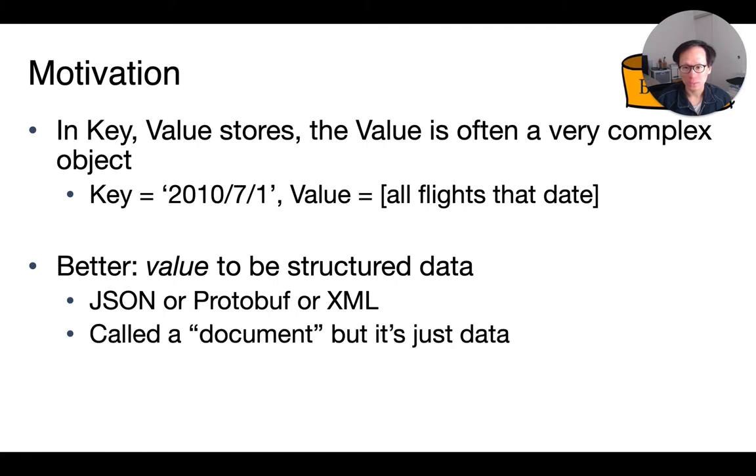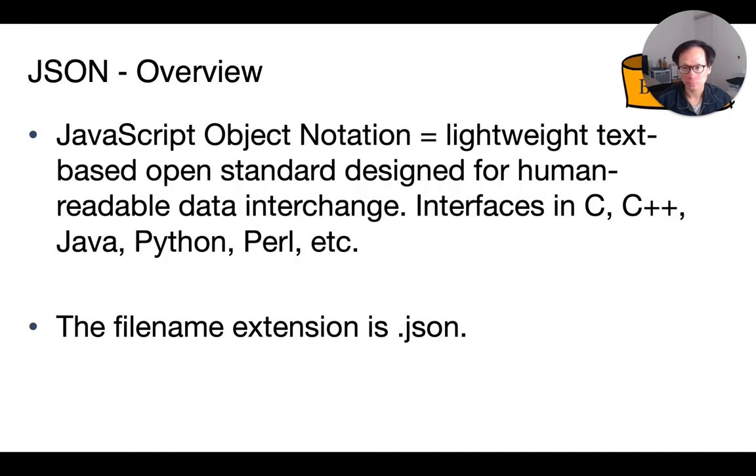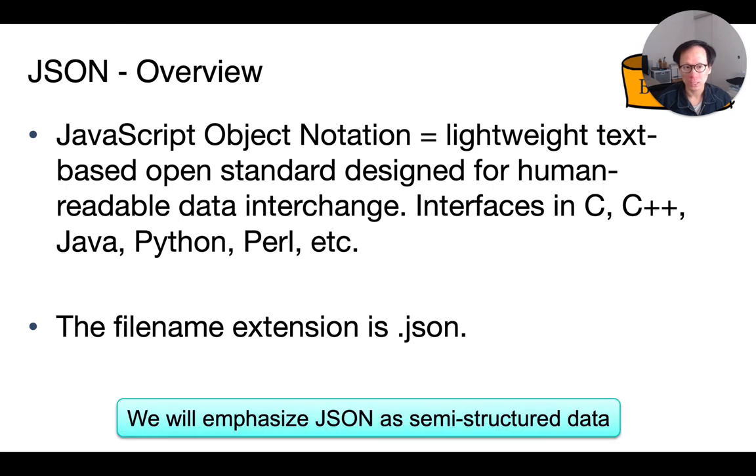And in this class, let's use JSON as the illustration. JSON stands for JavaScript Object Notation. It was originally designed for web applications and has since then gained popularity in document stores. In this class, we will use it as an example of the so-called semi-structured data.